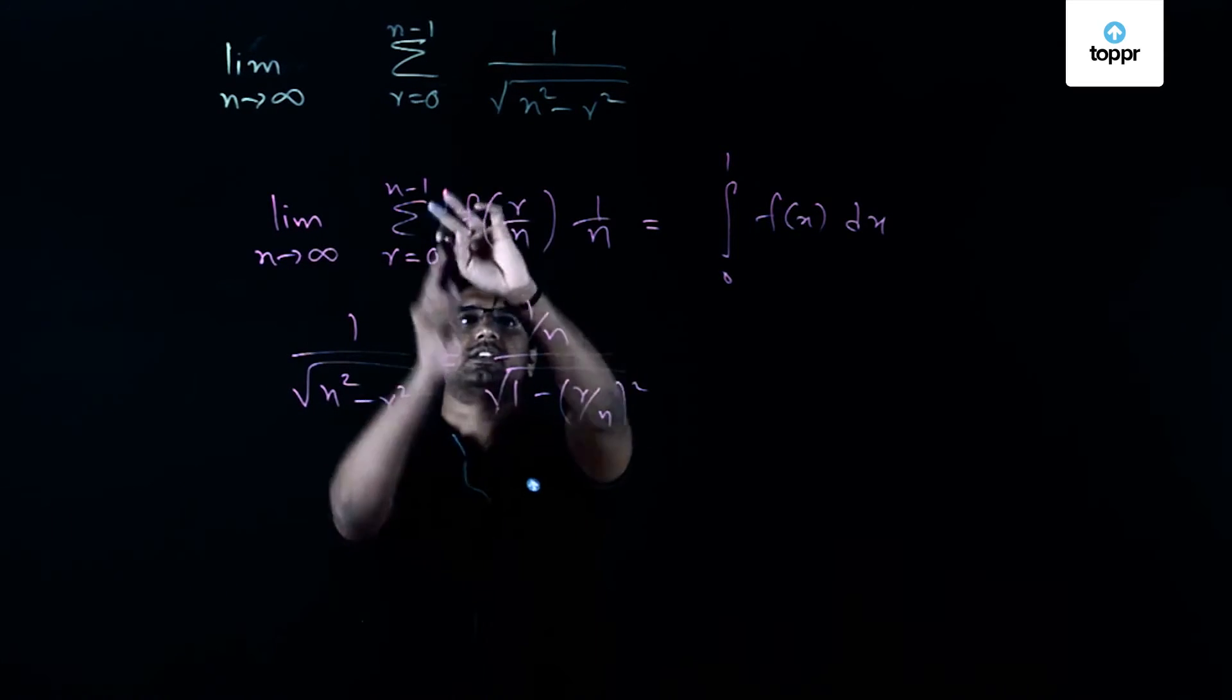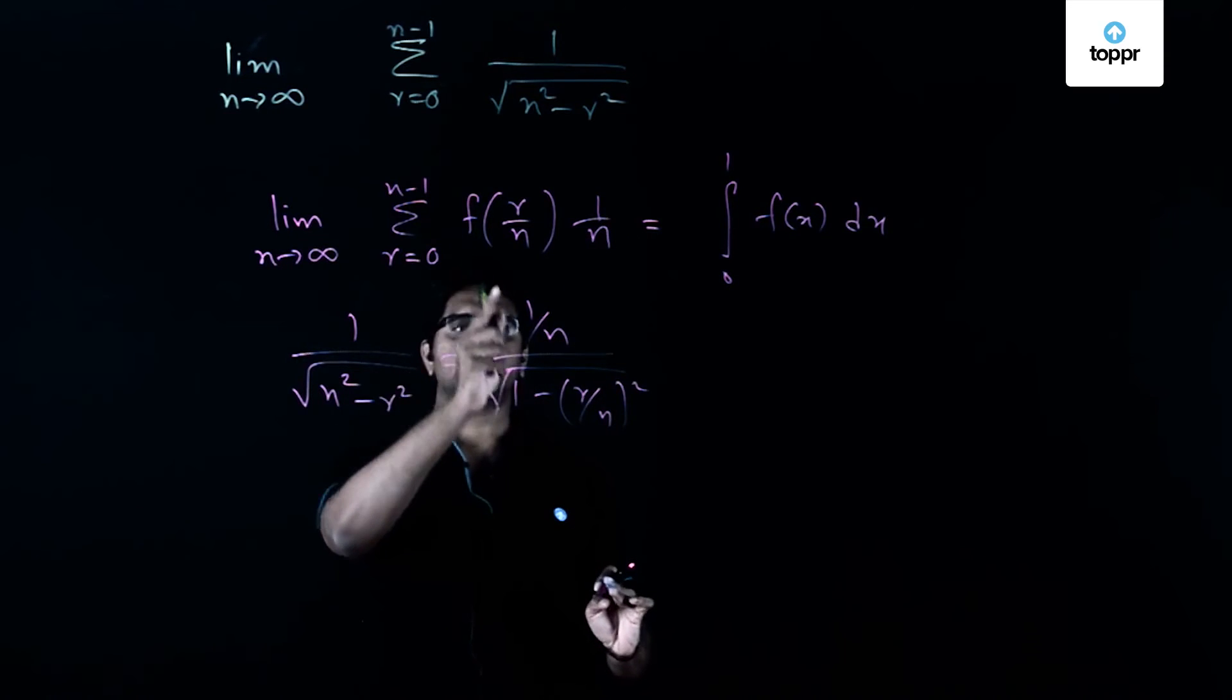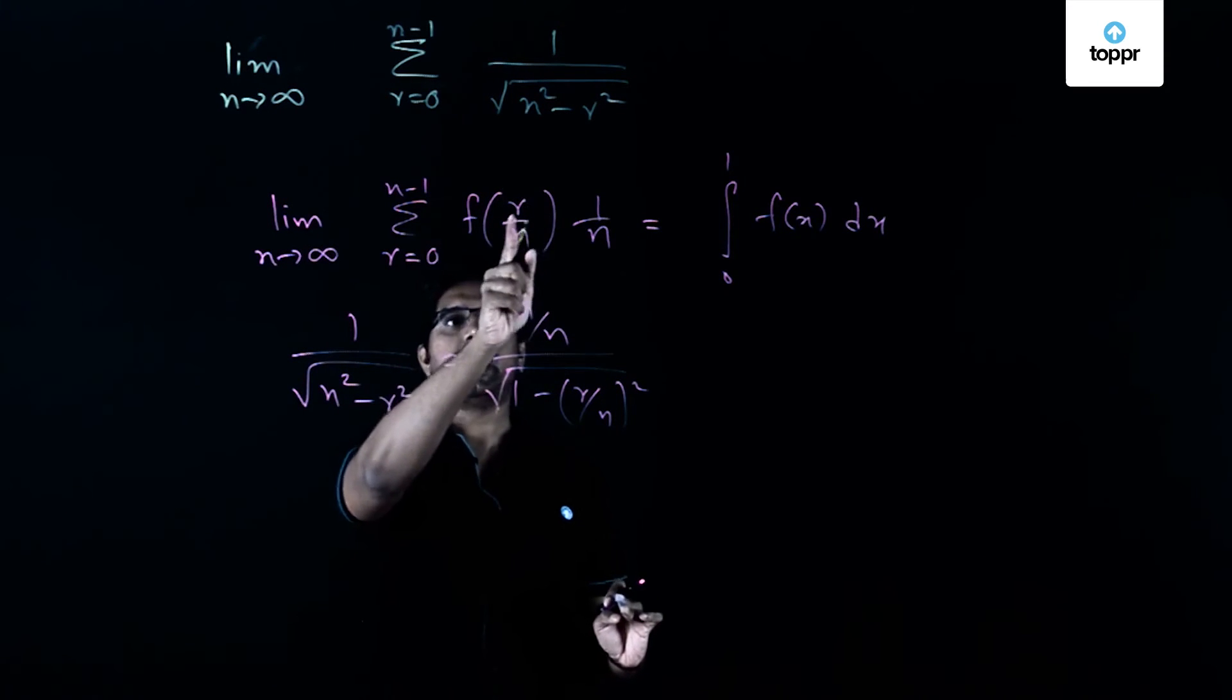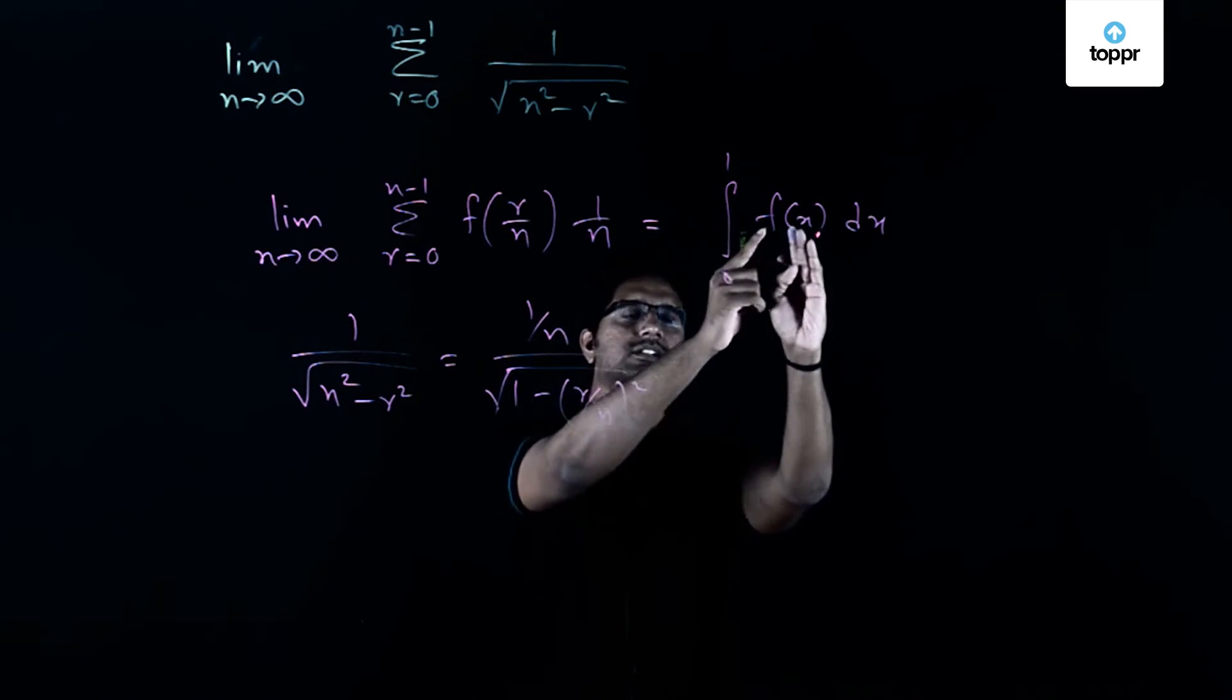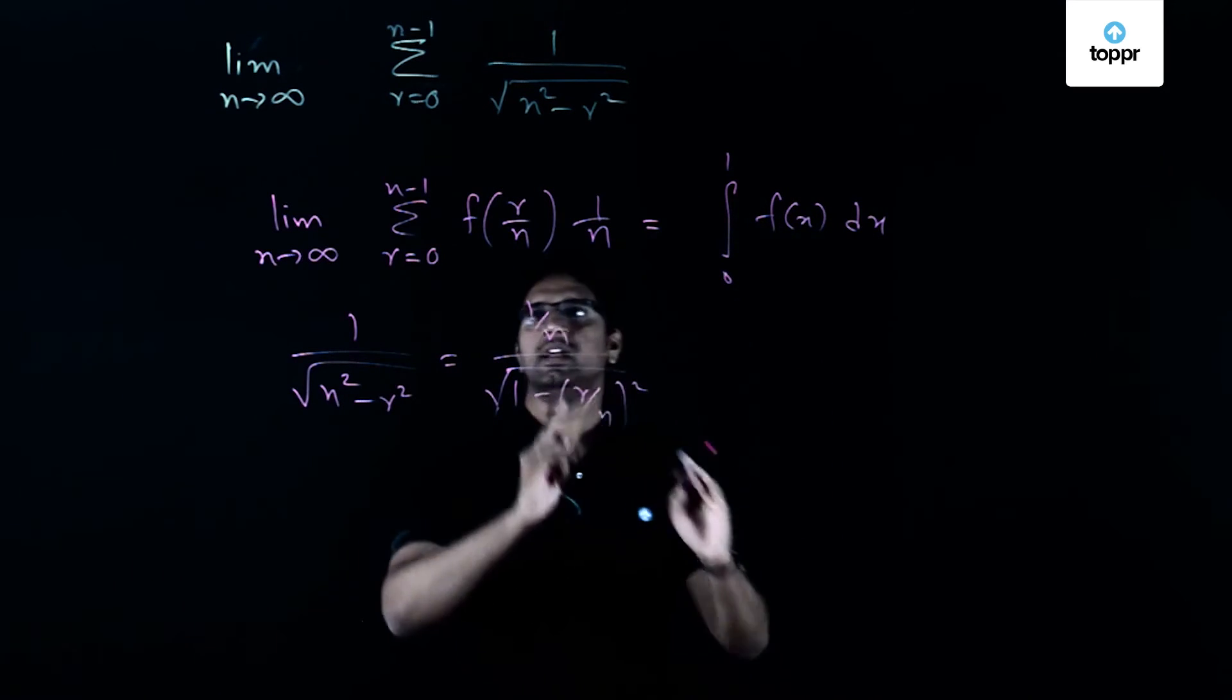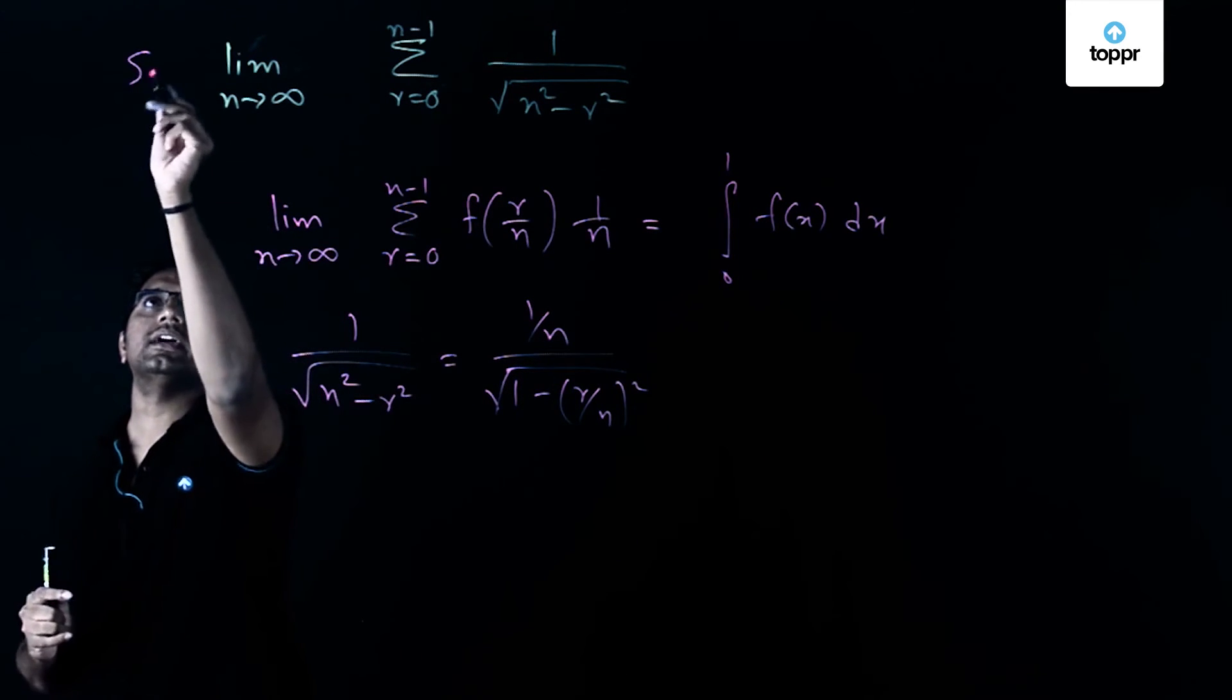If you compare it with the form which I have given here, we have 1 by n and the function which has the argument as r by n. That is the same function which we have to substitute in the integral.